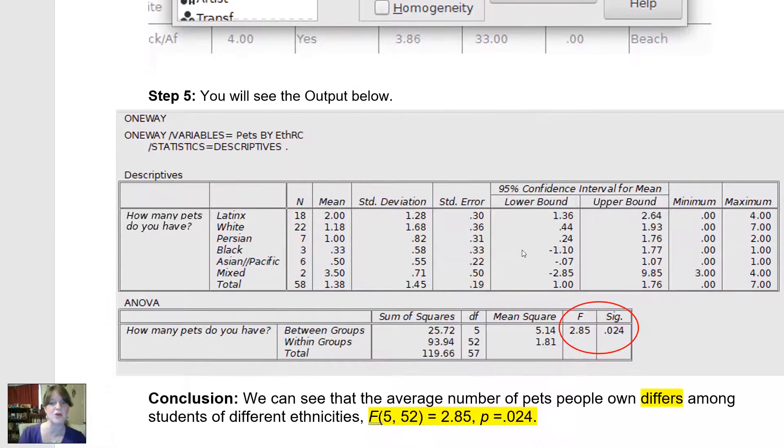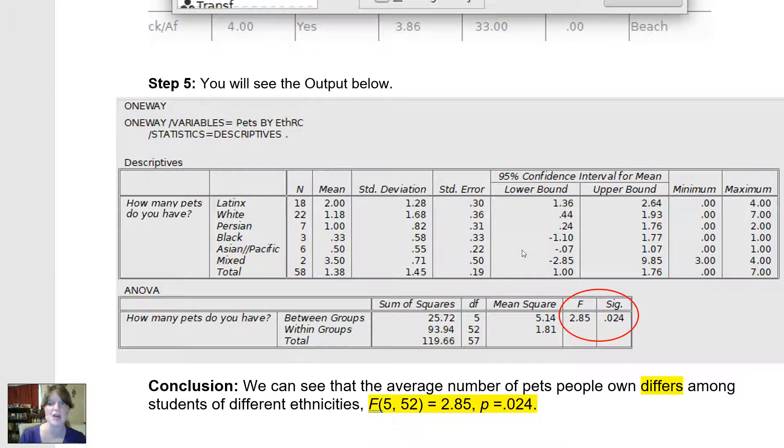And this is the output that will show up. Here we have all the different sample sizes for my individual groups for a total of 58. 18 Latinx students, 22 white students, 7 Persian students, 3 black students, 6 Asian or Pacific Islander students, and then two students who self-identified as mixed.